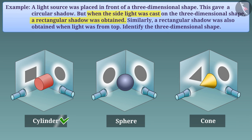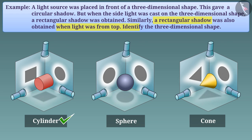Therefore, we can say that the shape is a cylinder. We can verify this from the third condition: when the three-dimensional shape is lit from above, a rectangular shadow is obtained — which is also true for a cylinder.